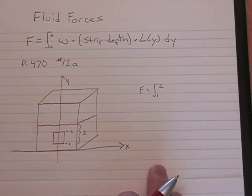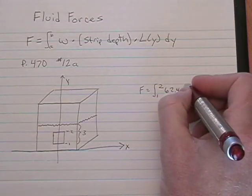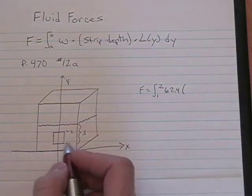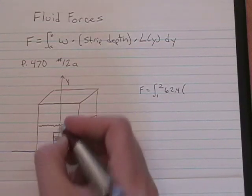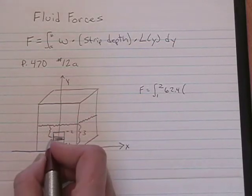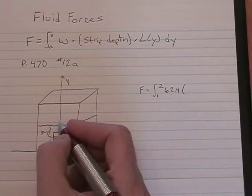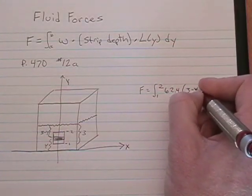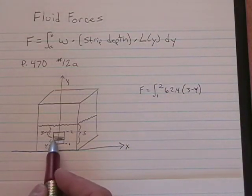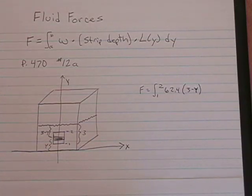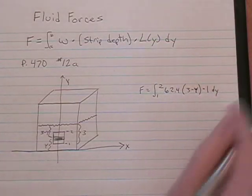Since we're dealing with water, our weight density is 62.4. Now to add in the strip depth, we're going to add a typical strip onto our picture. And that strip depth, if this is Y, is three minus Y. That's how deep the strip is from the top of the water. So we've got three minus Y for the strip depth. L of Y is easy on this picture because how wide is every single strip going to be? Since it's a square, L of Y is just one. And then our strip thickness is dy.